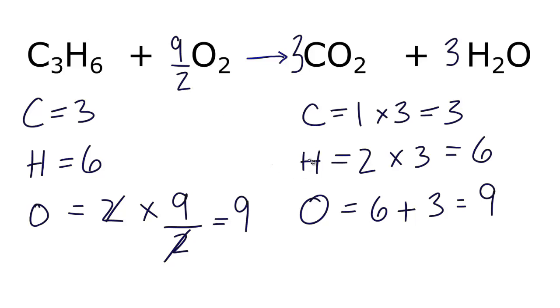Some people don't like having fractions as coefficients and we can fix that by multiplying everything in the reaction by two. So we can multiply two here and then two times nine over two. The twos cancel out and we're left with nine.